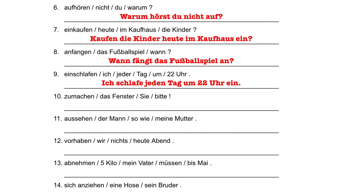Next up we have another command, this time with the Sie form command. The command form just has the normal form of the verb — in this case machen — and then Sie directly after that. So we say Machen Sie, and of course zu has to go at the end of the sentence because it's a separable prefix verb. Machen Sie bitte das Fenster zu — please close the window.